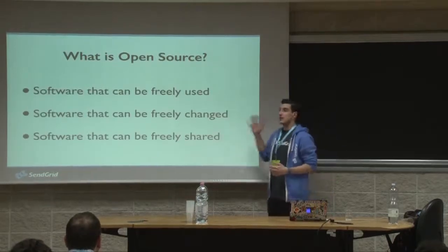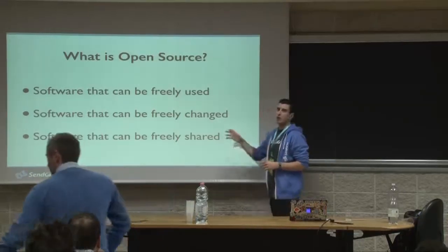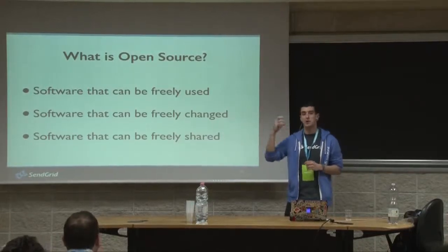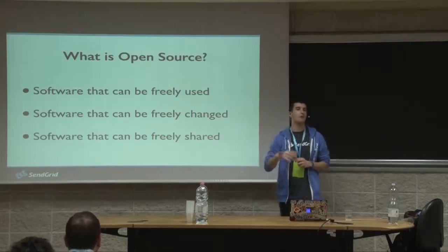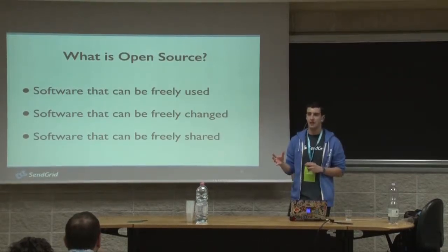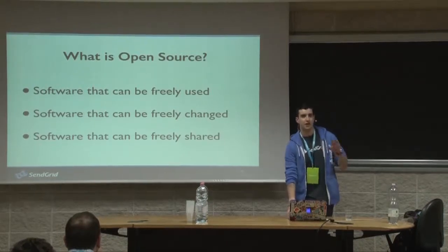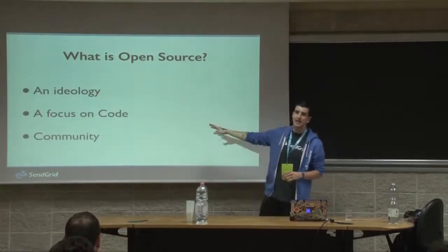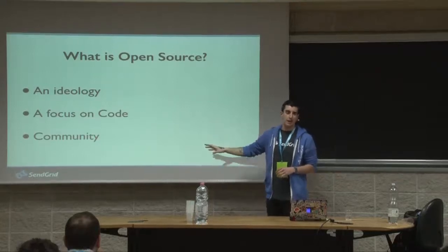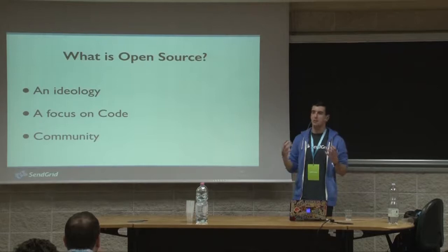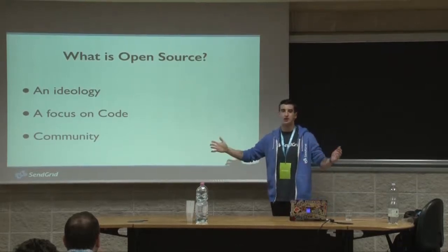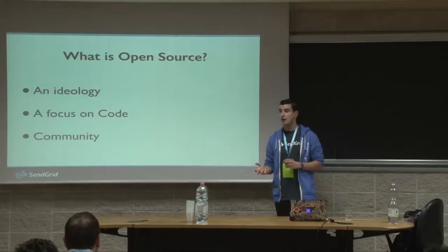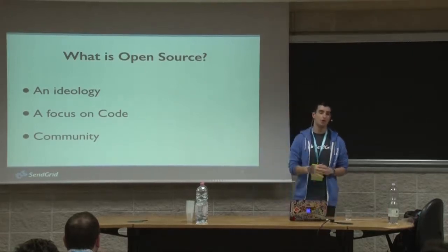So, what is open source? The terminology of open source really stands for three main things: software which can be freely used, software which can be freely changed or modified, and software that can be freely shared or distributed. Now, I kind of disagree that that's what open source means as a terminology. For me, open source is realistically about these things: it's an ideology — the want to make better software by opening up the contributor pool to the wider community of developers, and a want for free software and shared software, even if it's not free by money.